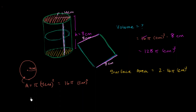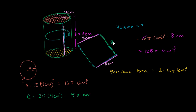The question is: what is the other dimension of that unwound rectangle? That dimension is essentially how far we went around the cylinder, which is the same as the circumference of the top or the bottom circle. The circumference is 2 pi times the radius, or 2 pi times 4 centimeters, which equals 8 pi centimeters. So when you unwind it, the rectangle has dimensions 8 centimeters by 8 pi centimeters.